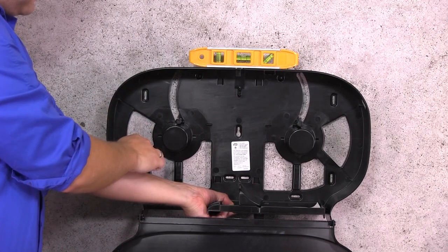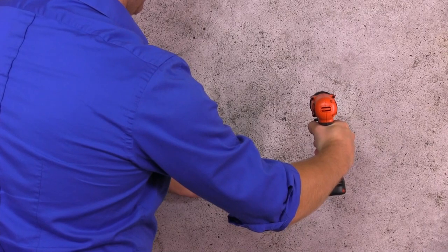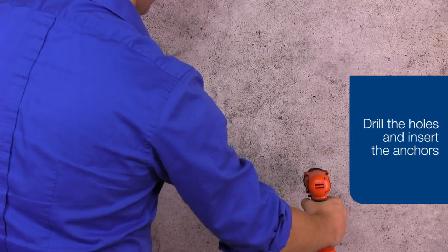Through the holes at the back of the unit, use the pencil to mark the spots where the drilling will be necessary. Drill the holes and insert the anchors.